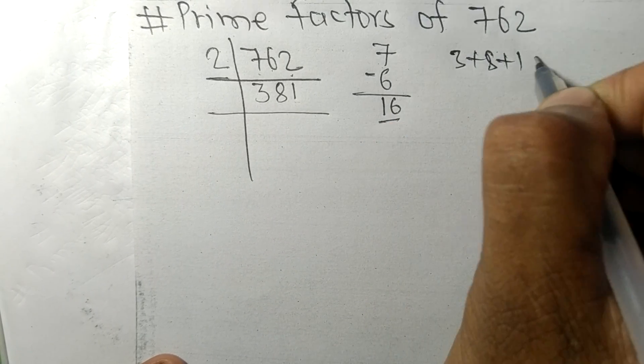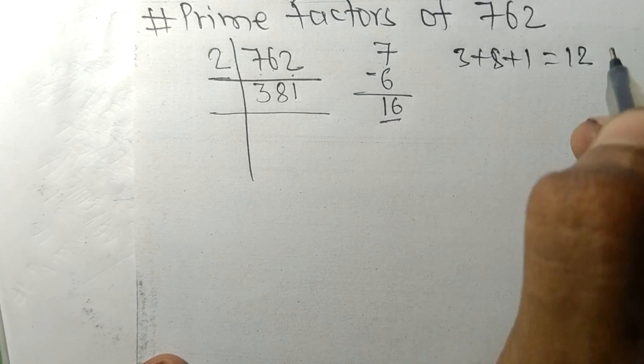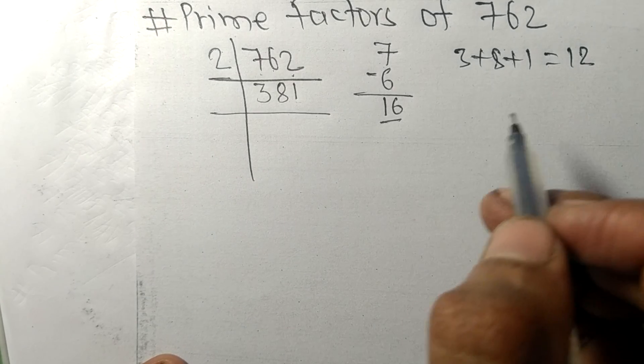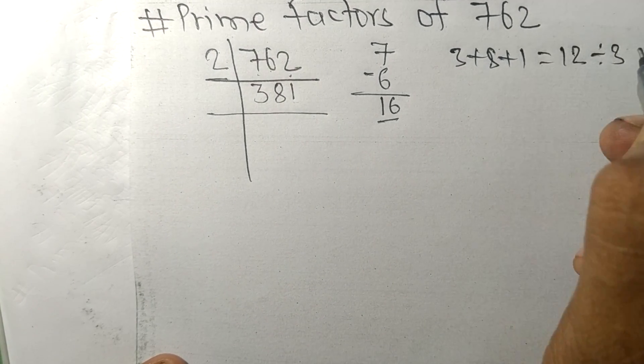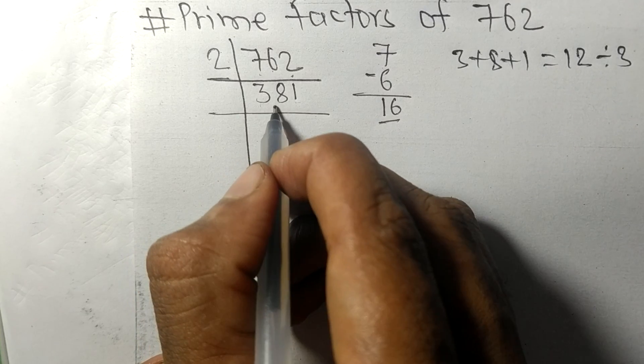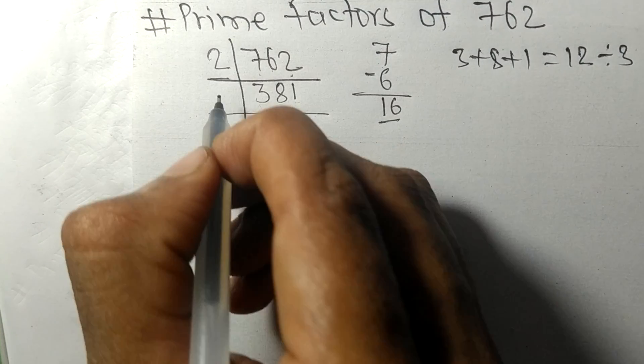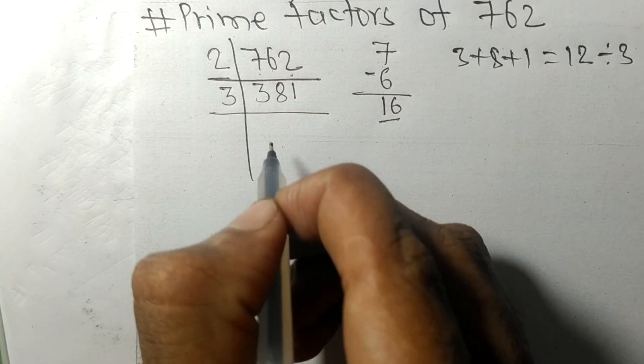And 12 is exactly divisible by 3, so 381 is also divisible by 3.